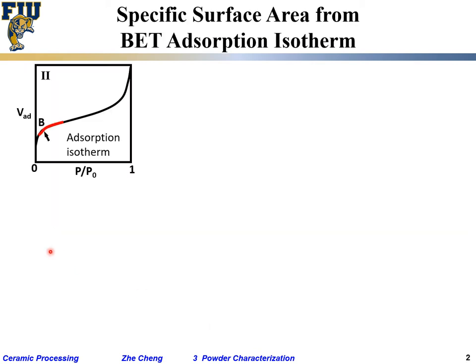The typical BET adsorption-desorption isotherm for monolayer to multilayer adsorption shows no limiting plateau — adsorption continues going up. At low pressure, it starts similarly to the Langmuir isotherm, rising until monolayer coverage is achieved, then instead of flattening it keeps going up and up, because the model assumes indefinite multilayer buildup.